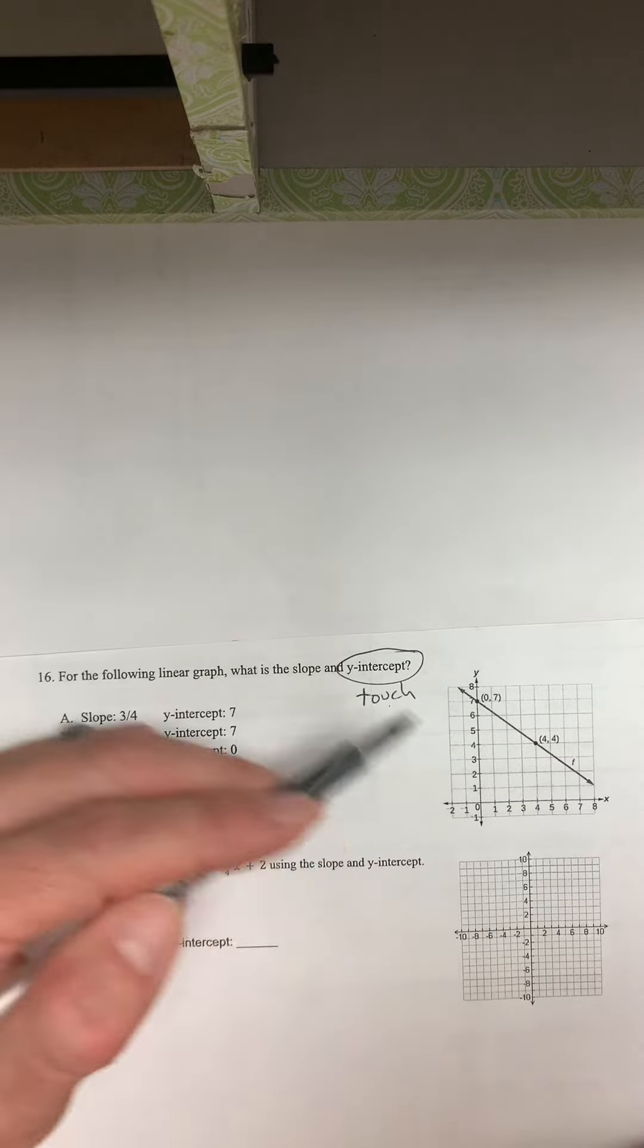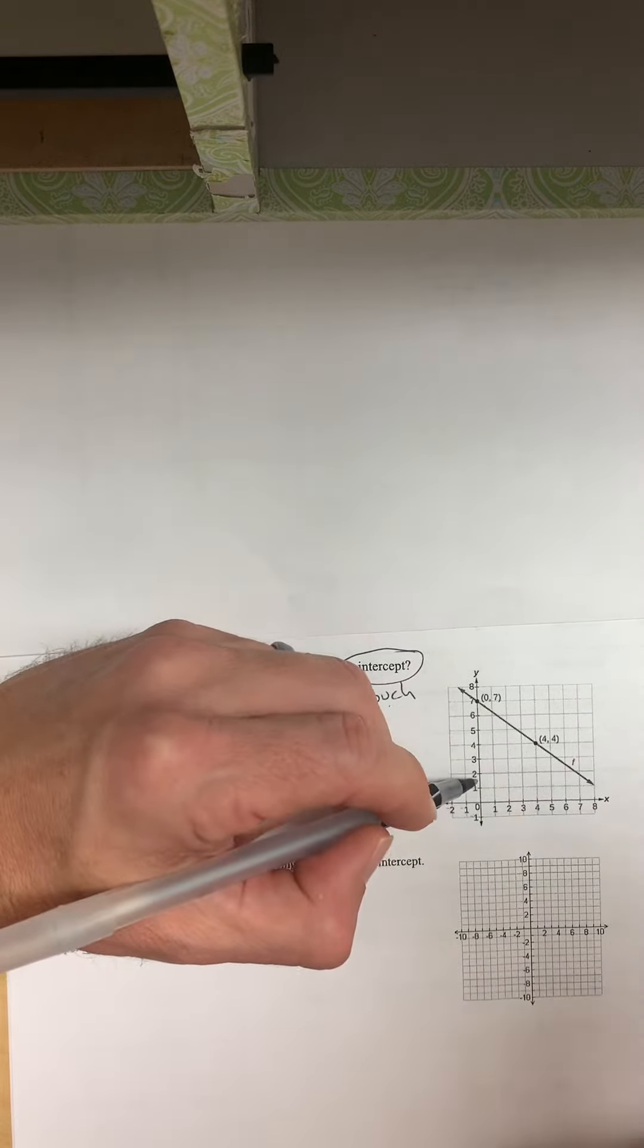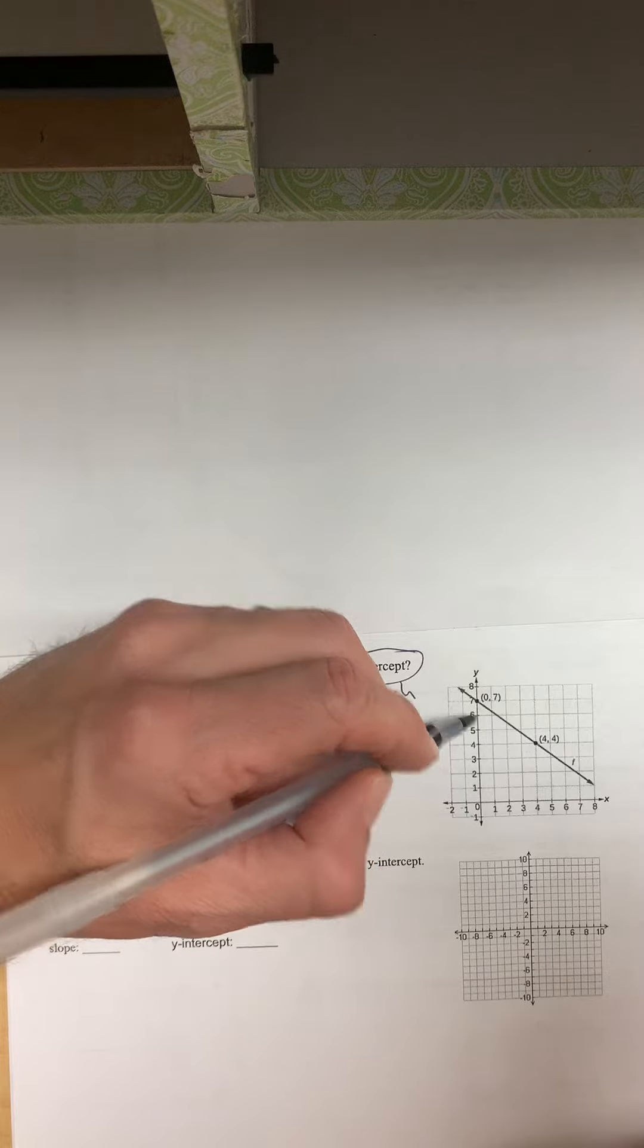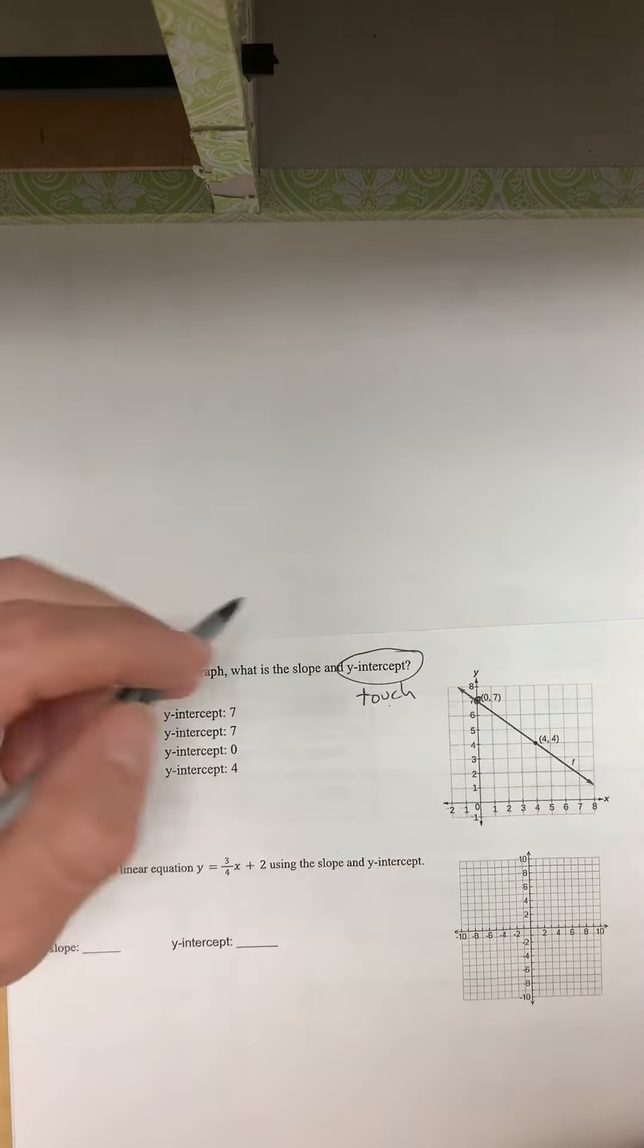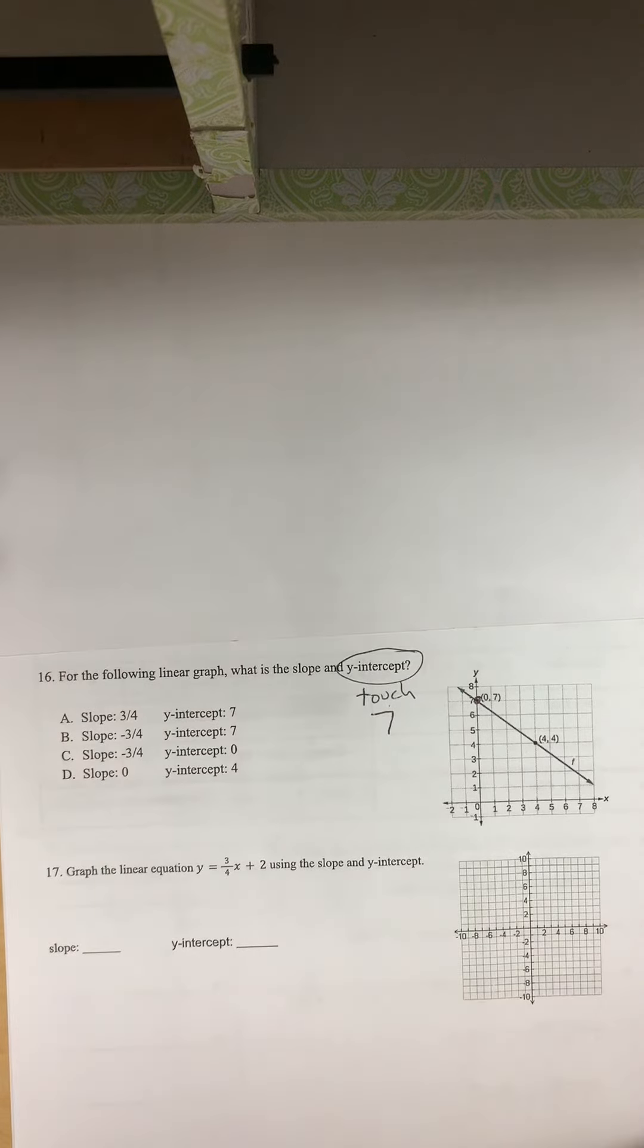Where does the graph touch it? It touches it at 1, 2, 3, 4, 5, 6, 7. So the y-intercept is 7. That's where it touches.